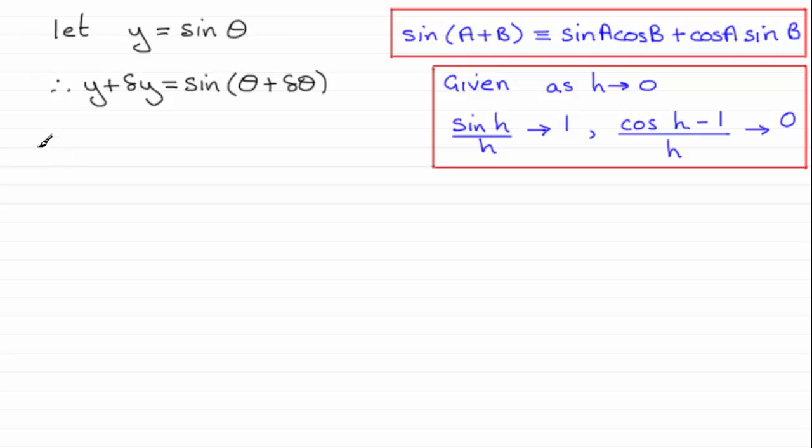Next what I'm going to do is subtract y from both sides, so therefore we have delta y equals the sine then of all of theta plus delta theta minus y.